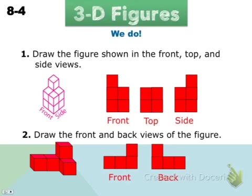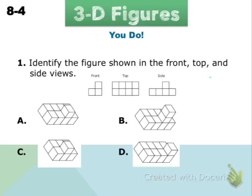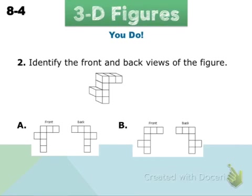To finish off this assignment and get credit for it, go ahead and do the last two 'you do's.' You're going to choose from these figures — luckily you don't have to draw them, you can just look at the pictures. Identify the figure shown by the top, front, and side view. For number two, identify the front and back, remembering that you're flipping it around to see the reverse. Make sure you get your five points for today.